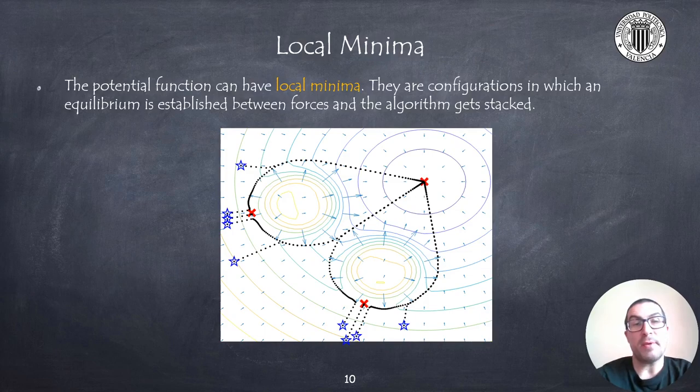This happens in configurations where the gradient becomes zero and is a consequence of the balance between the attractive and repulsive forces. The figure shows that there are some initial configurations from which the robot will not be able to reach the goal configuration.